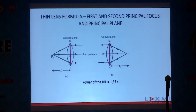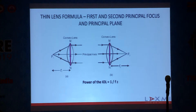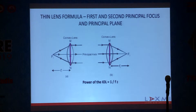To understand the principal plane, we first look at the thin lens formula. The first principal focus is the point in front of the lens from where light rays become parallel after refraction. The second principal focus is the point behind the lens where parallel rays of light come into focus. Routinely, the power of the IOL is calculated as the inverse of the second focal length.